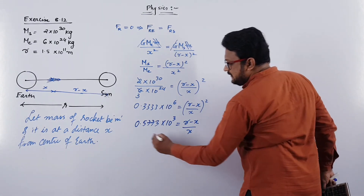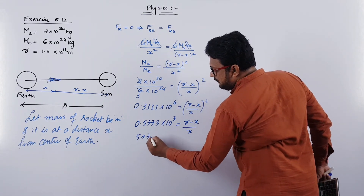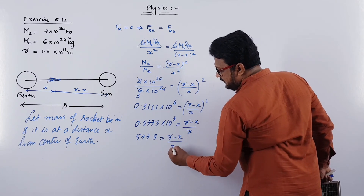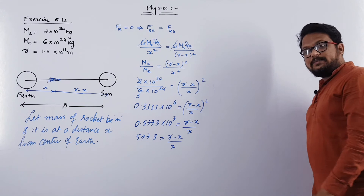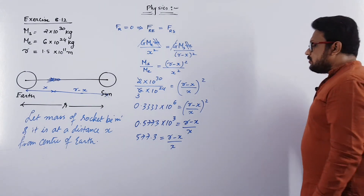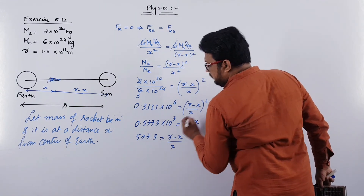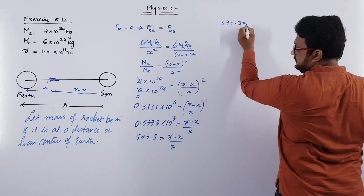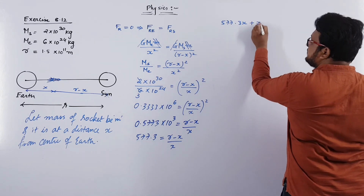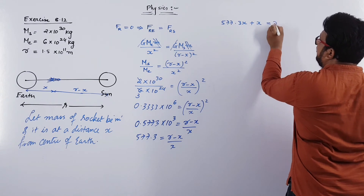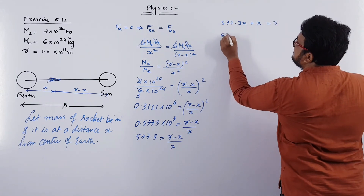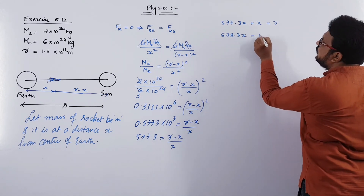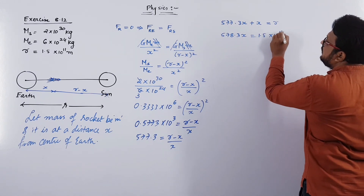If you multiply this out and cross multiply, you get 577.3x + x equals r. So 578.3x equals r. The value of r is 1.5 × 10¹¹, so 578.3x equals 1.5 × 10¹¹.